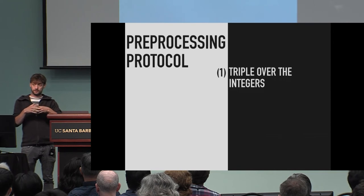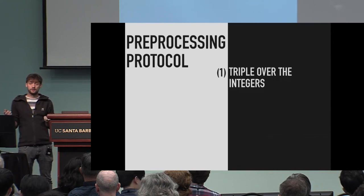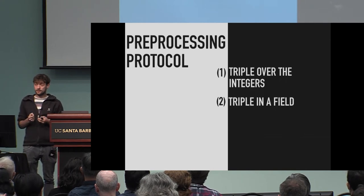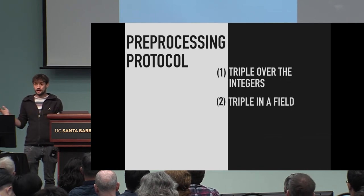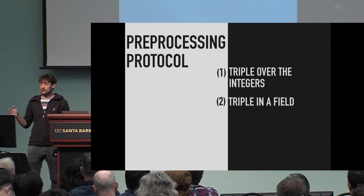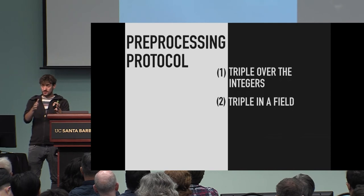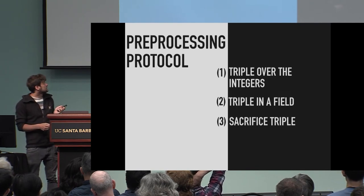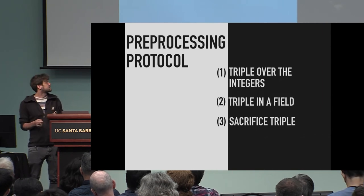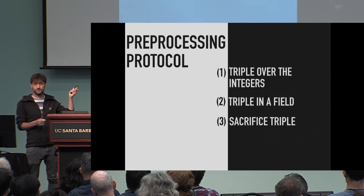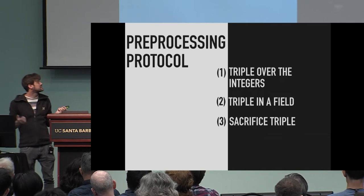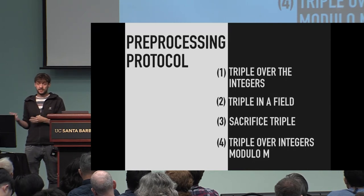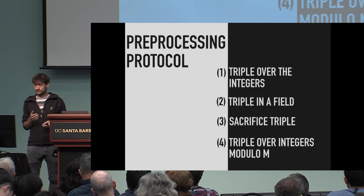First, we use standard semi-honest approaches to generate a multiplication triple over the integers with this noise. In the second step, we generate a multiplication triple semi-honestly secure over a field that is large enough that the triple from Z_m does not overflow — we can embed the integer triple into the prime field without ever needing a modular reduction. We then interpret the integer triple as a triple in the field, and sacrifice the original field triple to check the correctness of the integer triple. Now we know the triples are correct, and we simply reduce the integer triple modulo m to obtain a triple in Z_m — if it's a valid multiplication triple over the integers, it's a valid multiplication triple in Z_m.